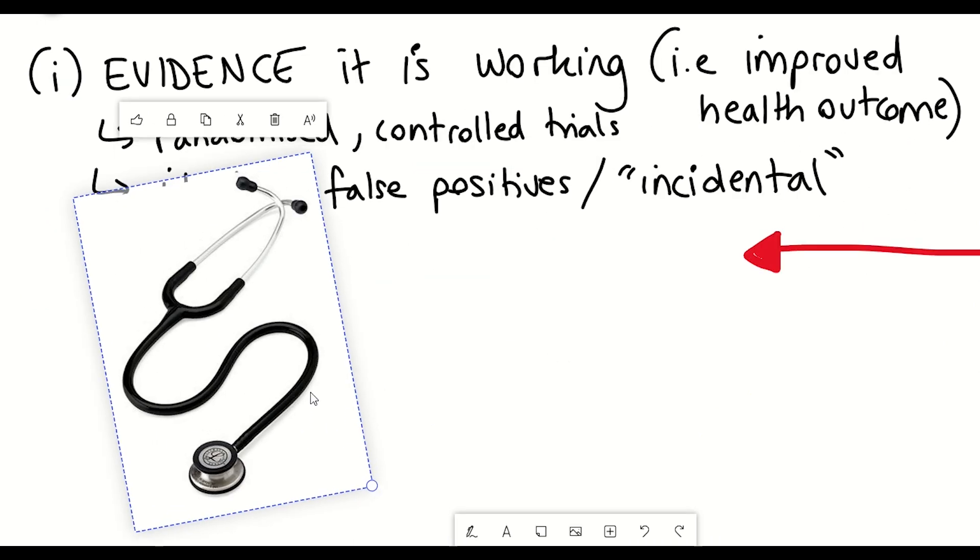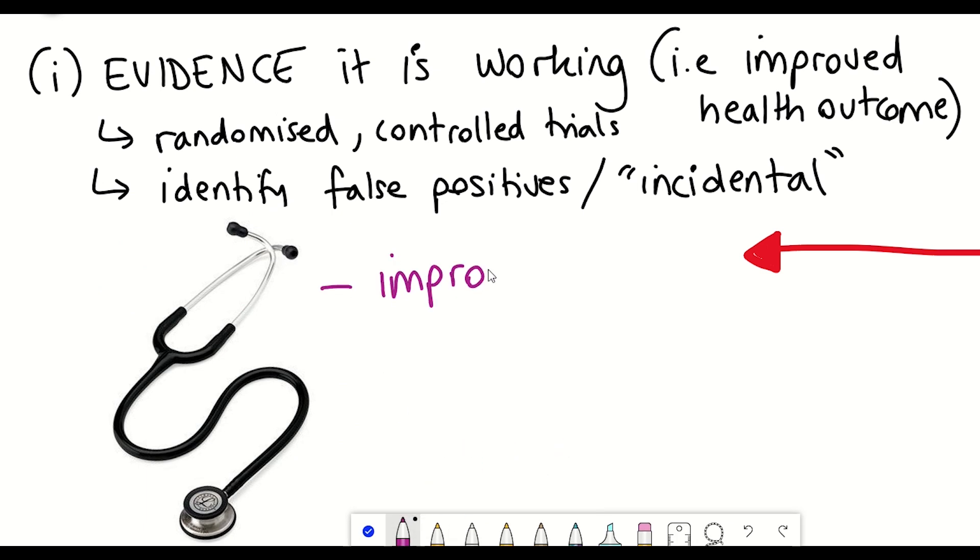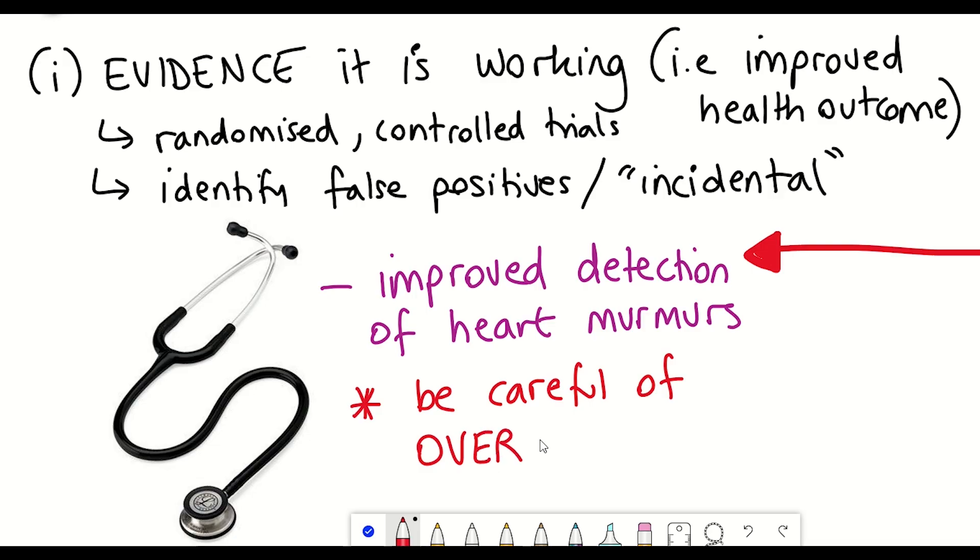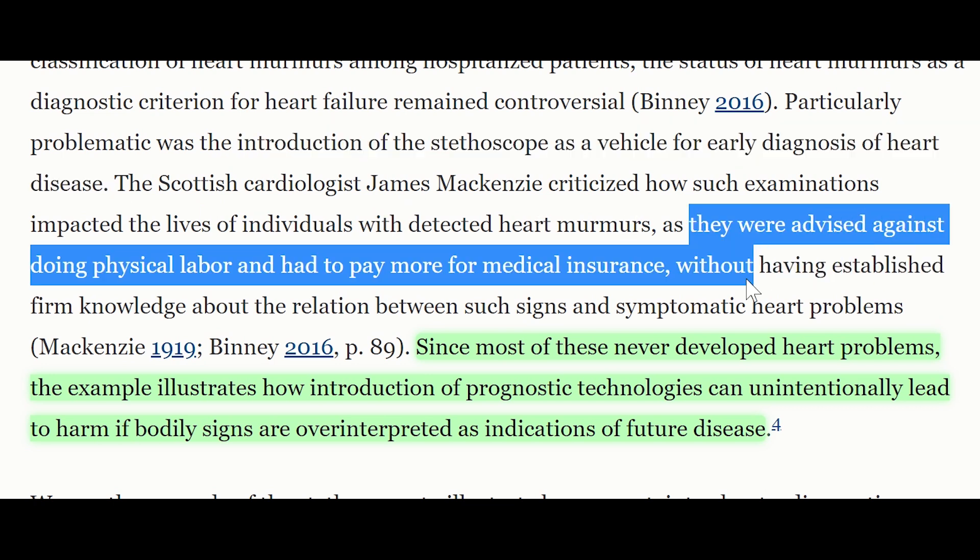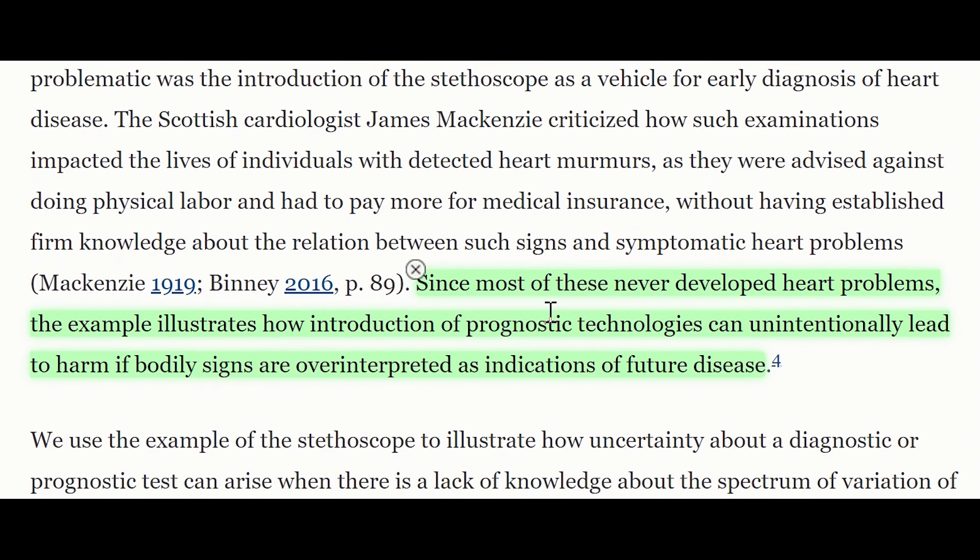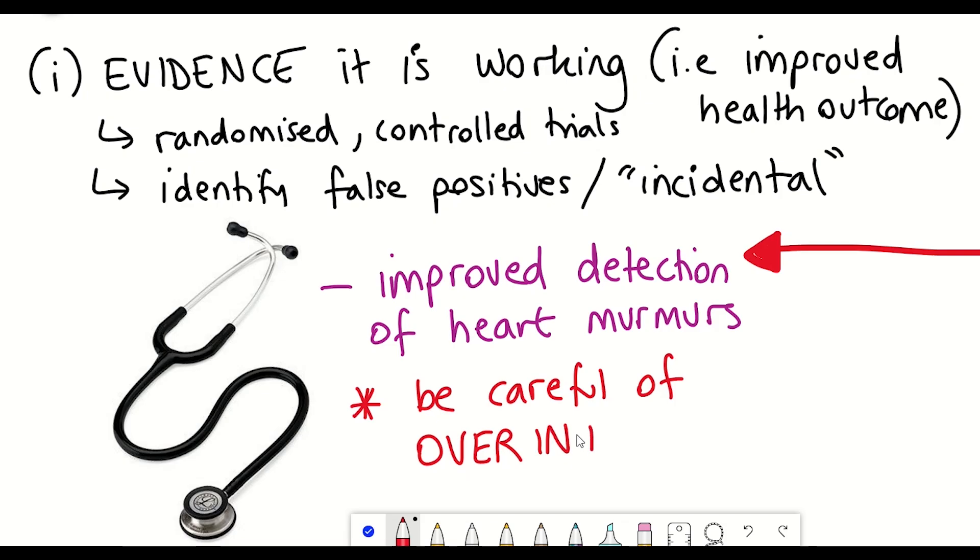For example, the introduction of the stethoscope was seen as a great advance due to the allowance for more precise detection and classification of heart murmurs among hospitalised patients. However, this led to problems when some individuals with detected heart murmurs were advised against doing physical labour and had to pay more for medical insurance without having established firm knowledge about the relation between such signs and symptomatic heart problems. And since most of these patients never developed heart problems, the example illustrates how introduction of prognostic technologies can unintentionally lead to harm if bodily signs are over-interpreted as indications of future disease.